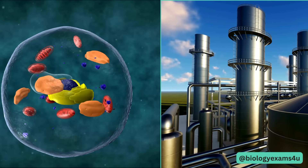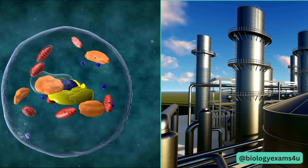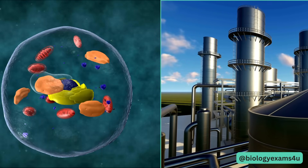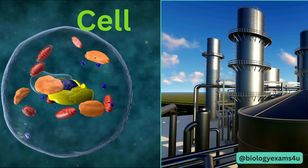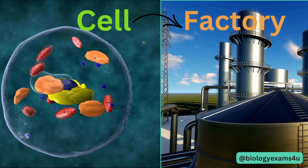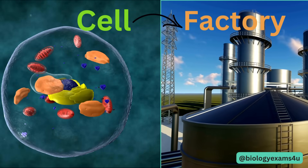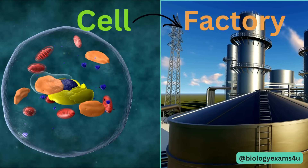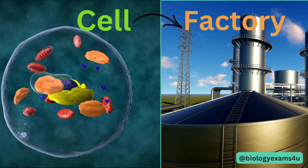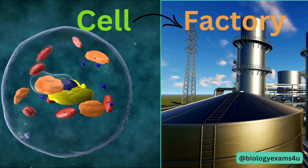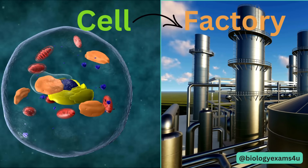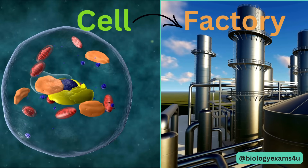The easiest way to understand cell structure and function is to compare and visualize a cell with some familiar structures like a factory. It's almost like a mini-factory within our bodies. By the end of the video, you will have an interactive understanding of various cell structures and their functions.